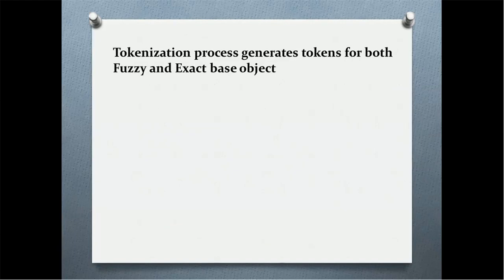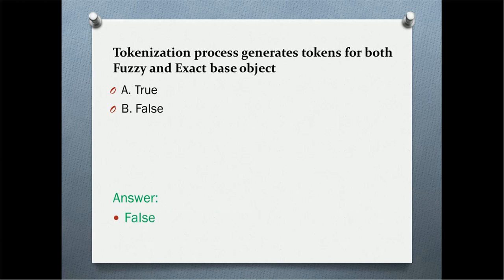Next question: the tokenization process generates tokens for both fuzzy and exact base objects — is this true or false? The correct answer is false. Fuzzy and exact base objects are declared at the match and merge setup level. If all match columns and match rules are exact, the table is treated as an exact base object. If even one match rule or column is fuzzy, the base object is treated as fuzzy. The tokenization process only generates tokens for fuzzy base object tables, not for exact base object tables, because exact matching requires no tokens.